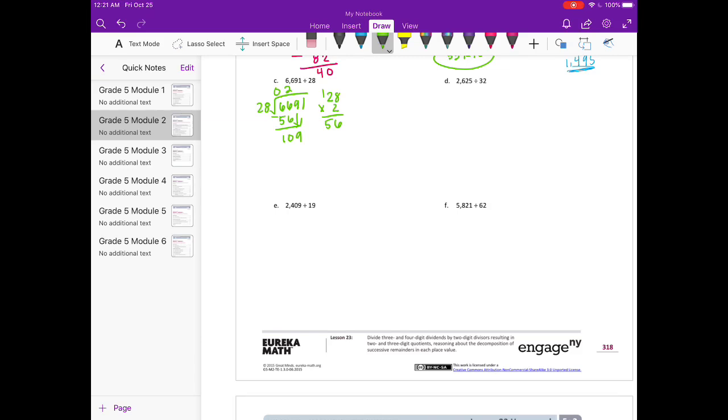28 could go in probably 3 or 4 times. So let's try 4 just to see if that will work. Nope, that's too big. 112 is too big because we're looking for 109. So 28 times 3 is 84. So we can go in 3 times. That's 84. We subtract and get 25.